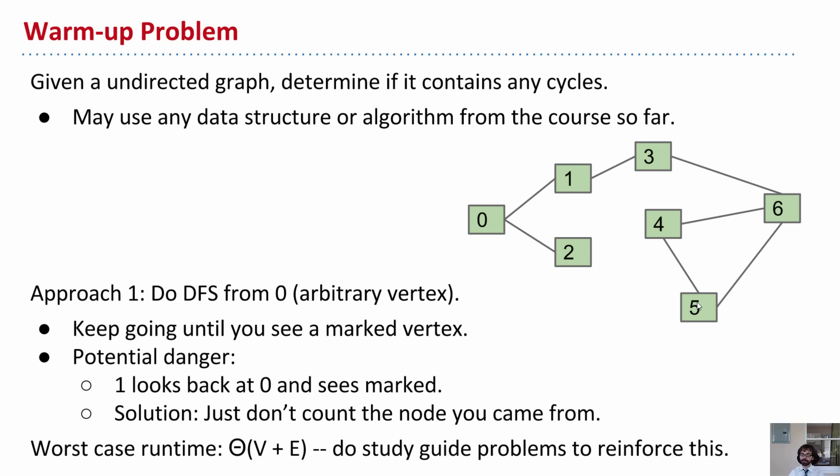And so something interesting happens if there's a cycle, which is that we'll see a vertex which has already been marked. So basically, you'll run DFS, and you'll continue to go until you see a vertex which has already been marked. And that means there's a cycle, because that means someone else was there before you.